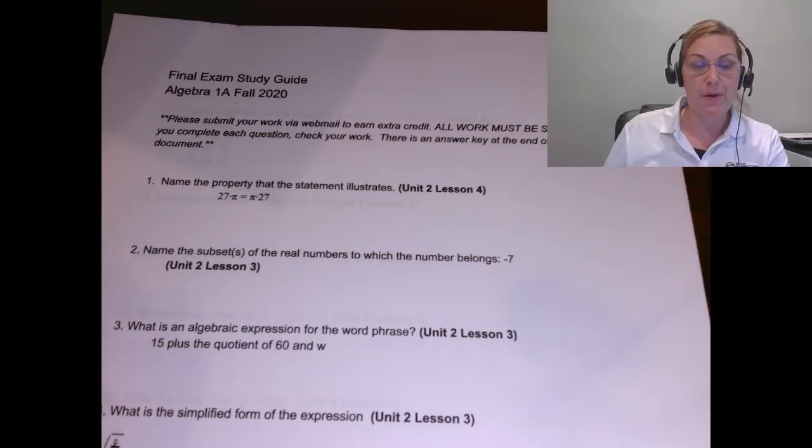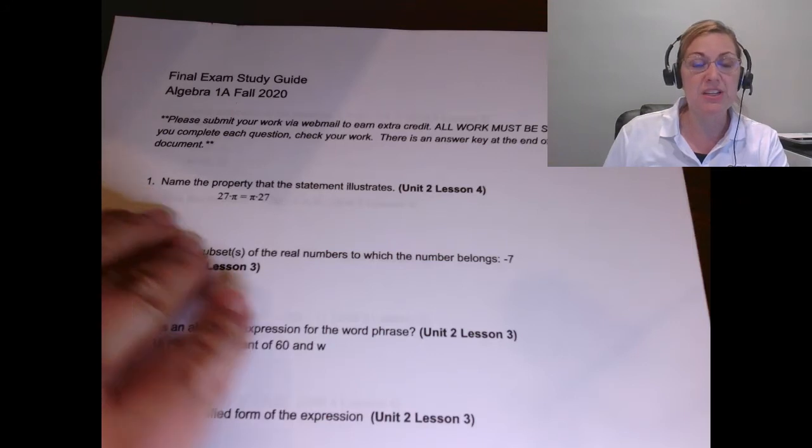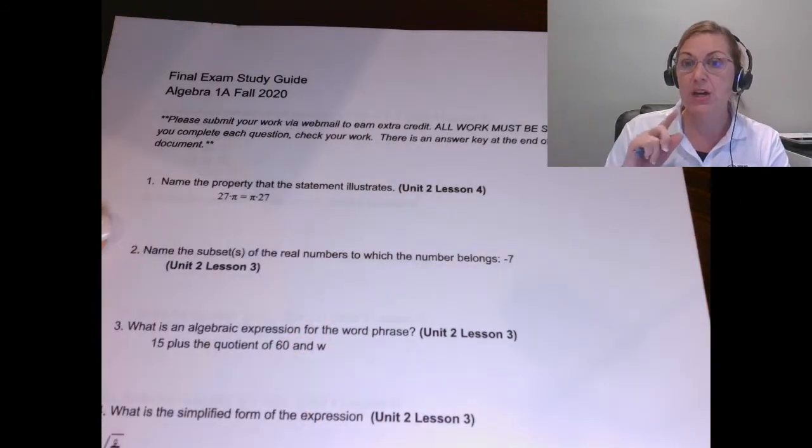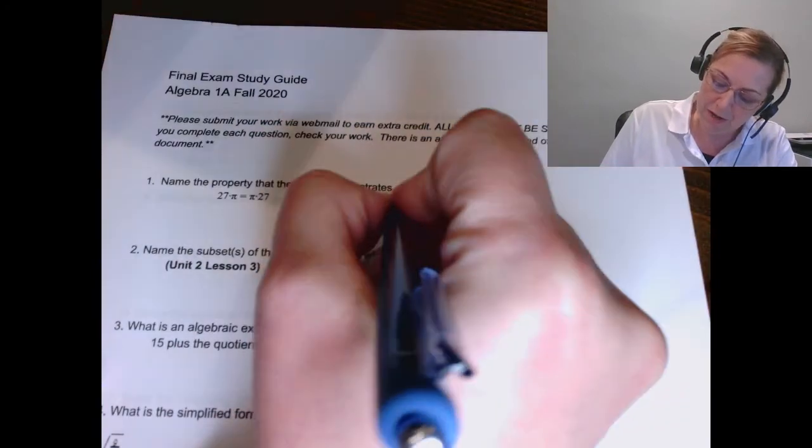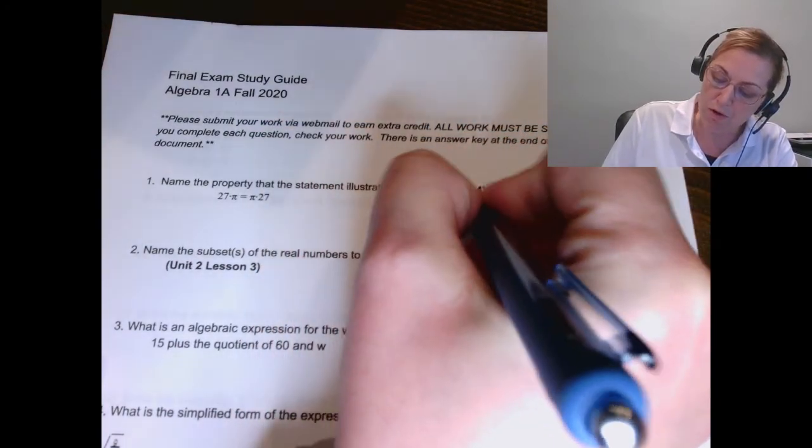Let's take a look at problem number one. Number one asks to name the property that this statement illustrates. We talked about three properties in our class. We talked about commutative property, which I'm making a few notes over here. Commutative property was about the order changing.